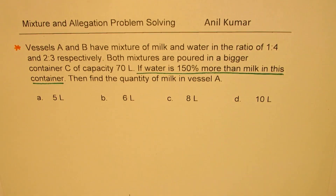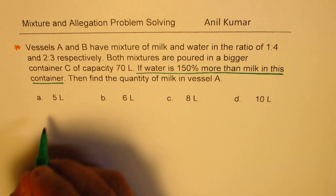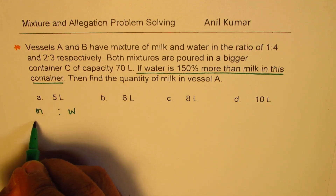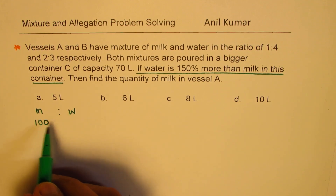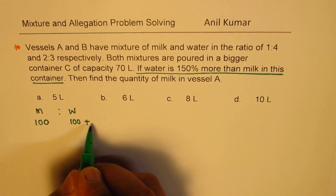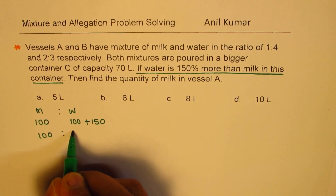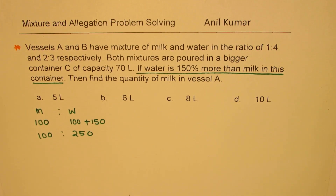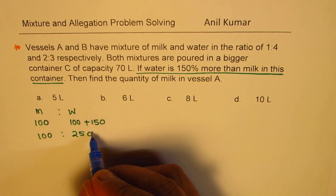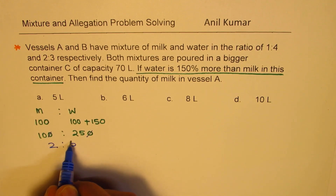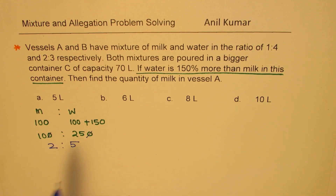The statement 'water is 150% more than milk' gives us the required ratio. If milk is 100, then water is 100 plus 150, which is 250. Simplifying 100 to 250: divide by 10 to get 10 and 25, then divide by 5 to get 2 and 5. So the ratio of milk to water in container C is 2 to 5. This is very similar to what we just solved.